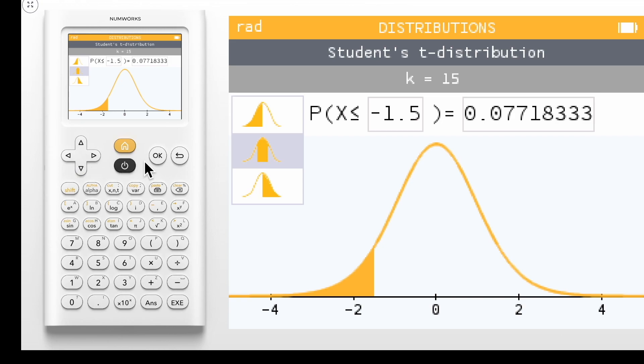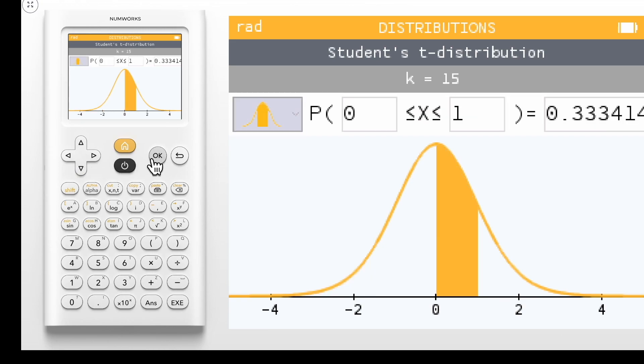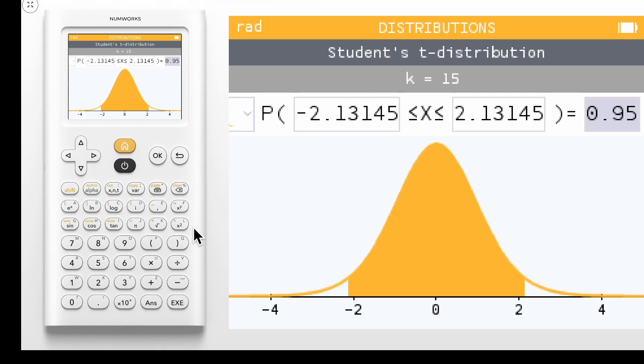Let's select the middle area. We can input a probability to calculate the critical values associated with the middle 95%. For more tutorials, visit NumWorks.com.